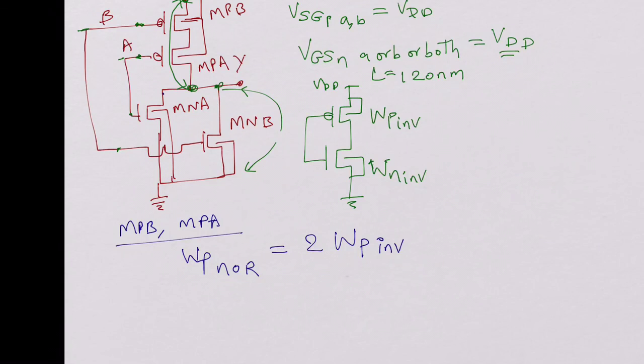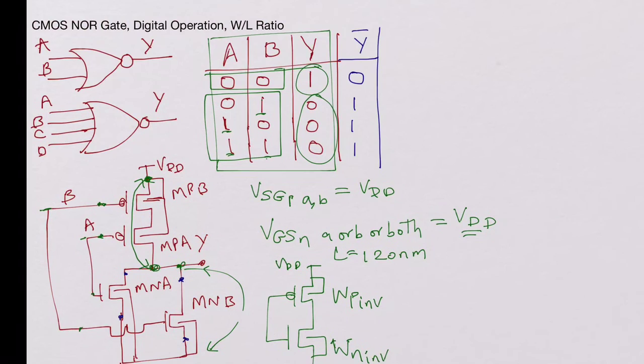Whereas if you look at the N channel side, there is only one N channel between the output and the ground. So WN of the NOR gate will be the same as the WN in an inverter for the same sized gate. That's how they are sized.